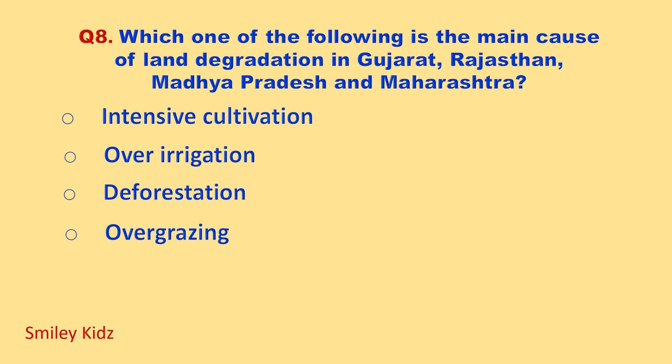Which one of the following is the main cause of land degradation in Gujarat, Rajasthan, Madhya Pradesh and Maharashtra? Your options are: intensive cultivation, over-irrigation, deforestation, over-grazing. Your time starts now.